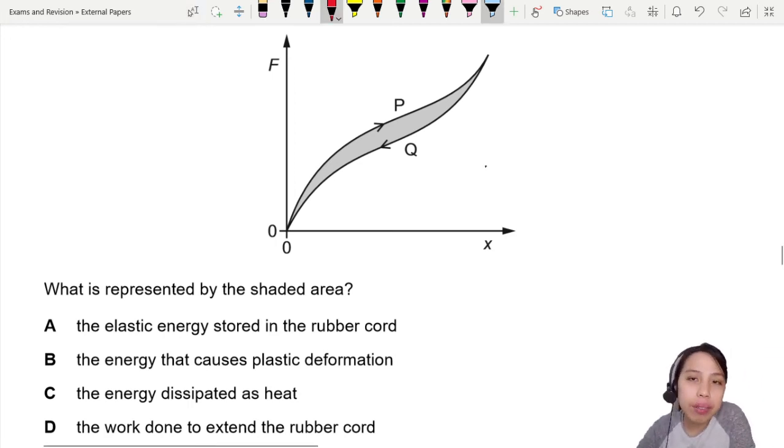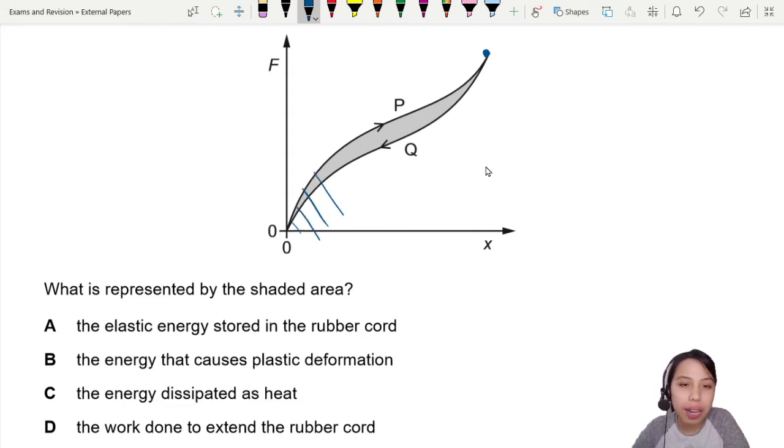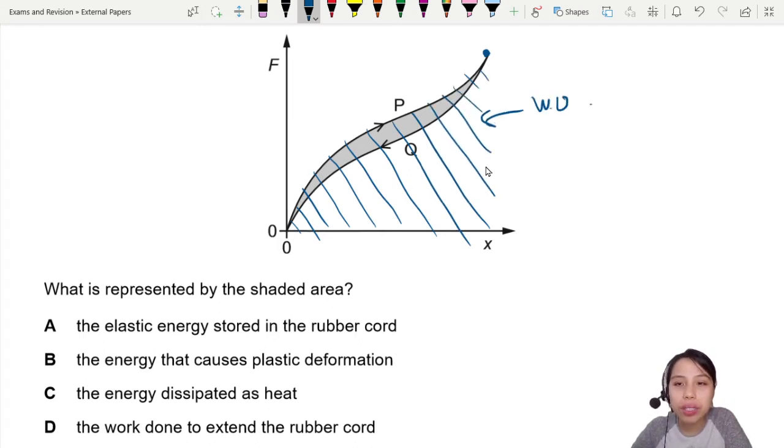The first area I want you to look at is when you're pulling this up to this point here - there's a certain area under the graph. This entire area under the graph is the work done to extend this rubber. You put in that energy.